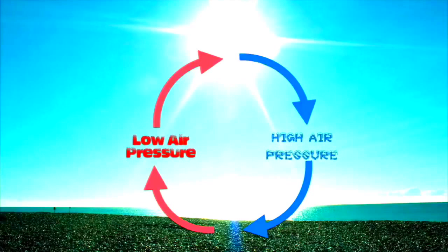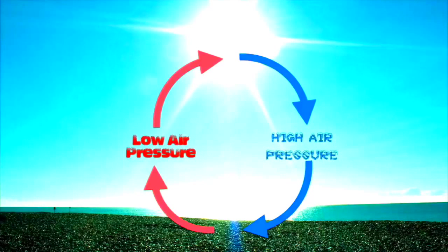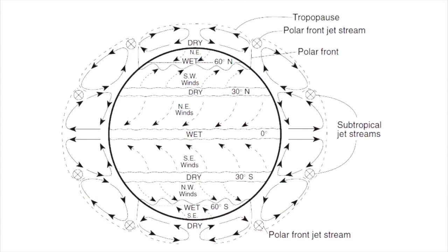One more important thing to remember: the color red is always going to mean low pressure, and the color blue is always going to mean high pressure. This is in your reference table on page 14, demonstrating the global air currents or the prevailing winds on Earth.